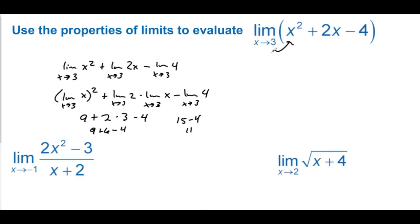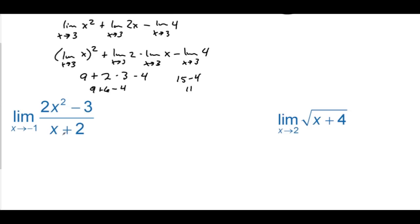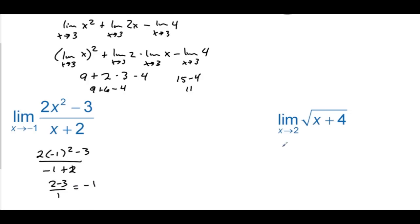That's the same exact thing as just plugging 3 into the x's, but the properties were required here. We could do the same with the next examples, but it's much more convenient to just plug in the values. For the rational expression, plugging in gives 2 − 3 over 1, which is negative 1. And for the square root example, we have the square root of the limit as x approaches 2 of x + 4, giving the square root of 6.